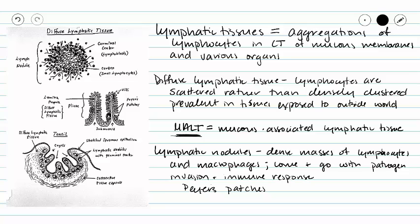When we look at lymphatic nodules — and here we're not talking about lymph nodes but nodules — we're talking about densely clustered groups of macrophages and lymphocytes that come and go in relation to pathogen invasion. We'll see these in our Peyer's patches in our small and large intestines.